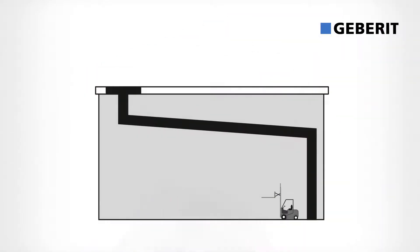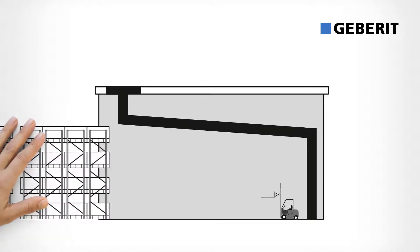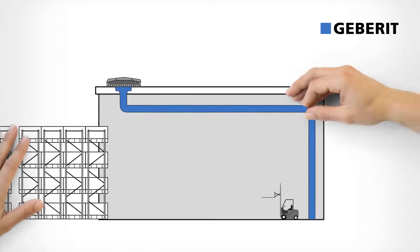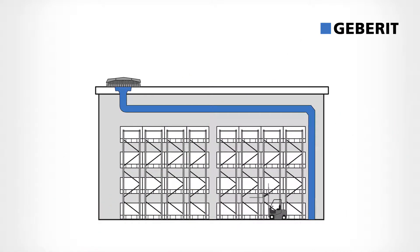In conventional roof drainage systems, the pipes require a slope. This takes up valuable space. That isn't the case with Geberit Pluvia. With this system, no slopes are created during installation. This ensures more efficient use of space.